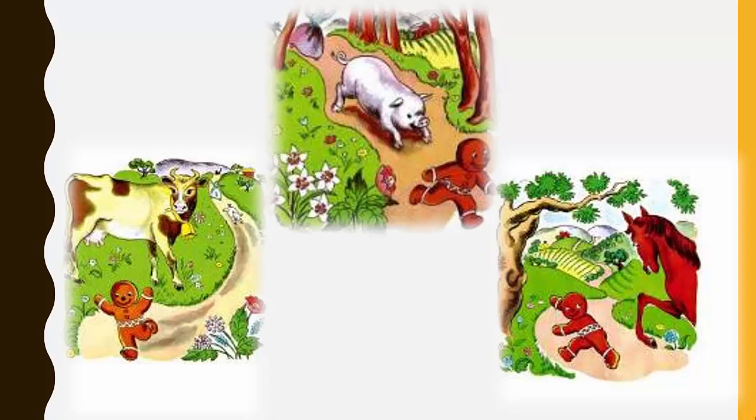The gingerbread man runs in front of a cow, a pig, and a horse, and each animal chases the gingerbread man eagerly, wanting to eat him. However, the gingerbread man escapes each of them, saying, 'You can't catch me! I'm the gingerbread man!'